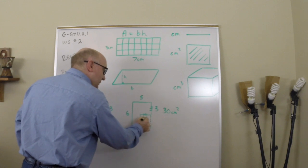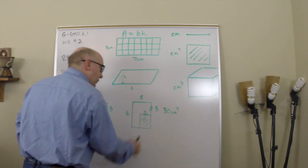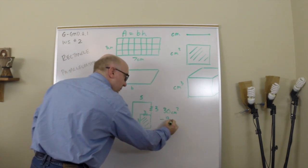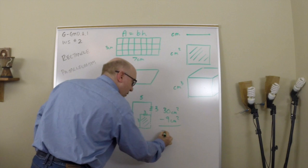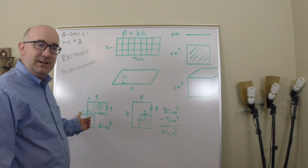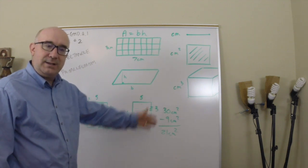And then they say, well, I'm going to subtract this little piece here, which would be a three by three piece. And so they would subtract nine, and they would also get the same answer. So you can think of it as pieces to make it up, or the whole minus piece.